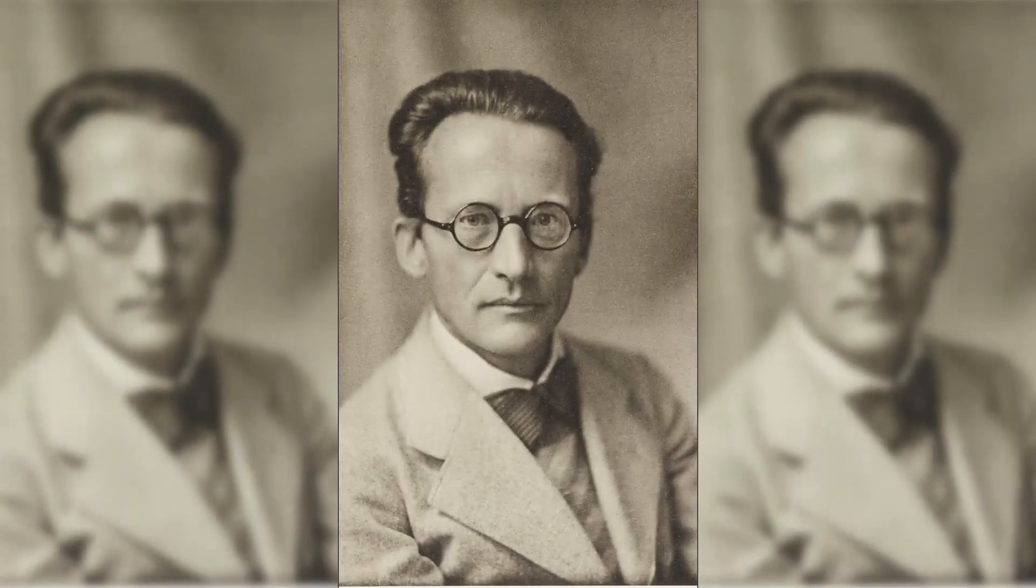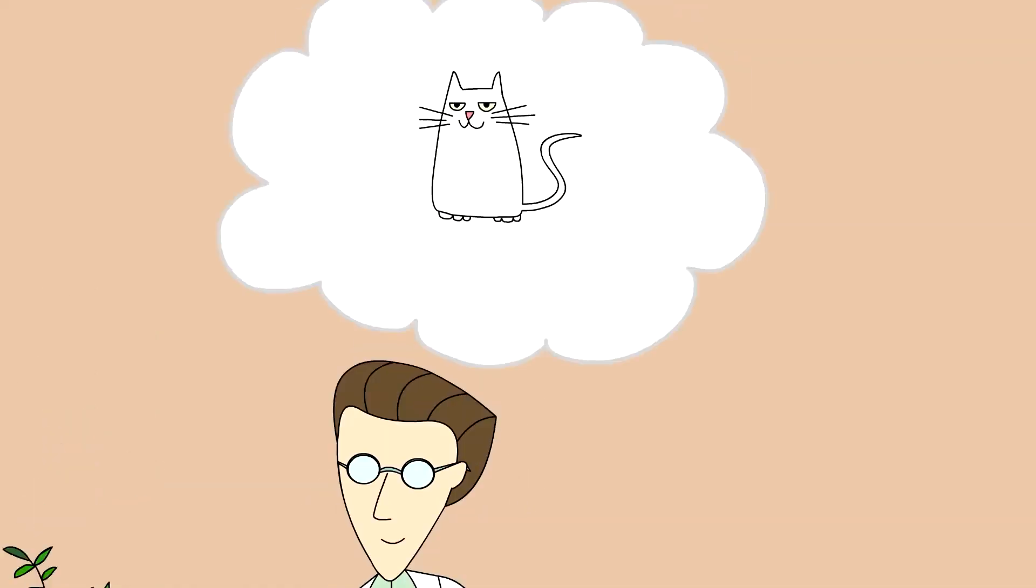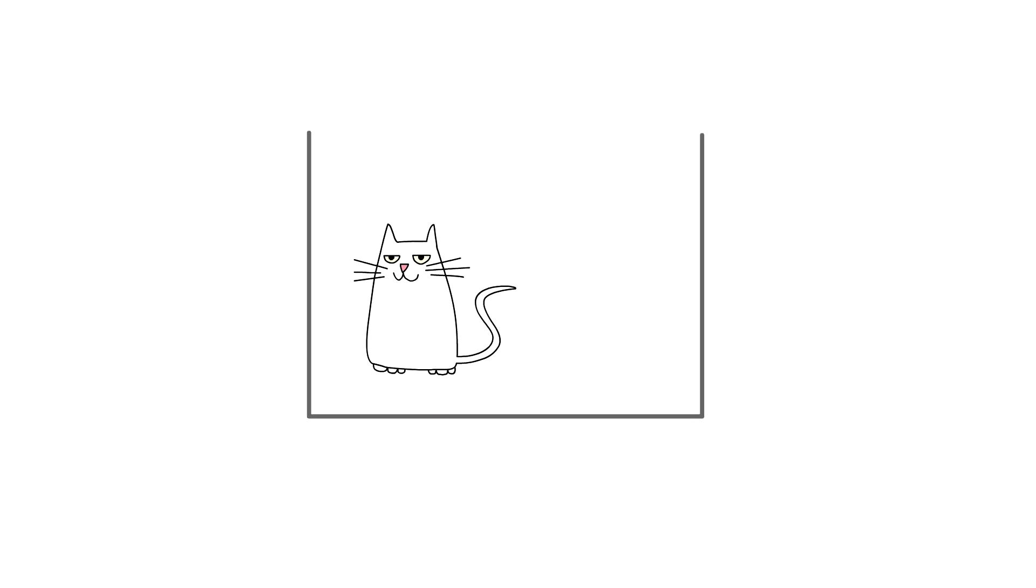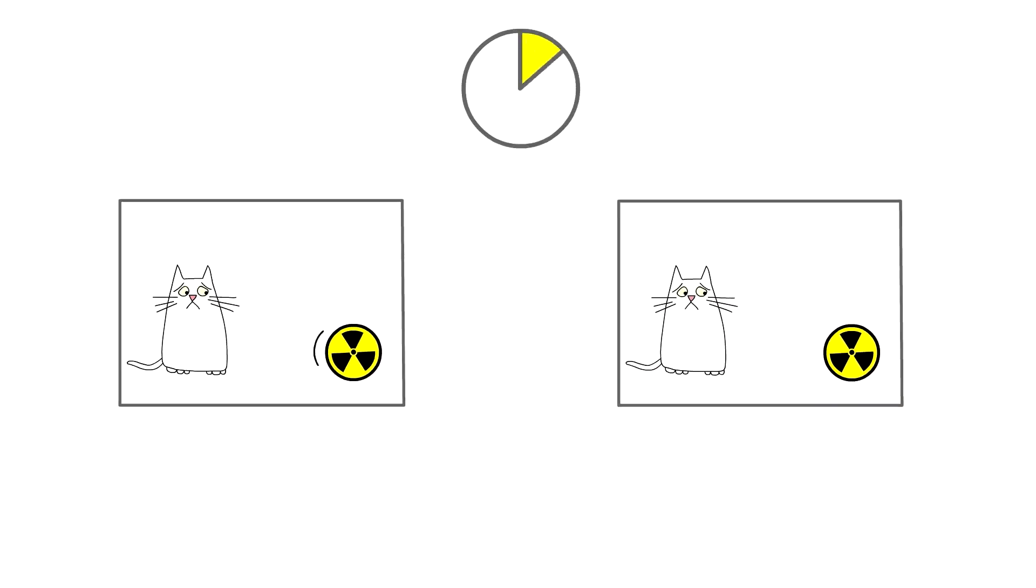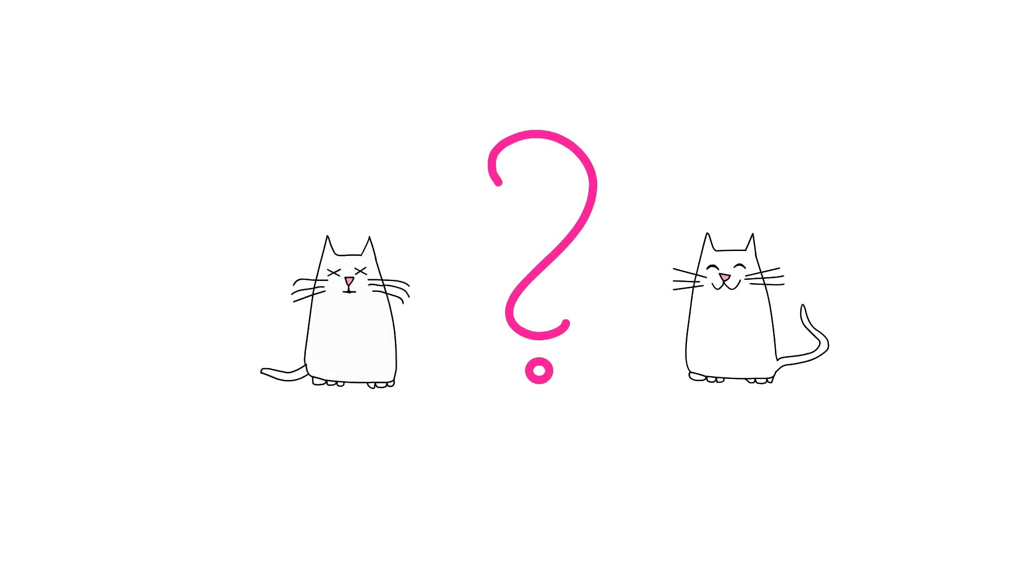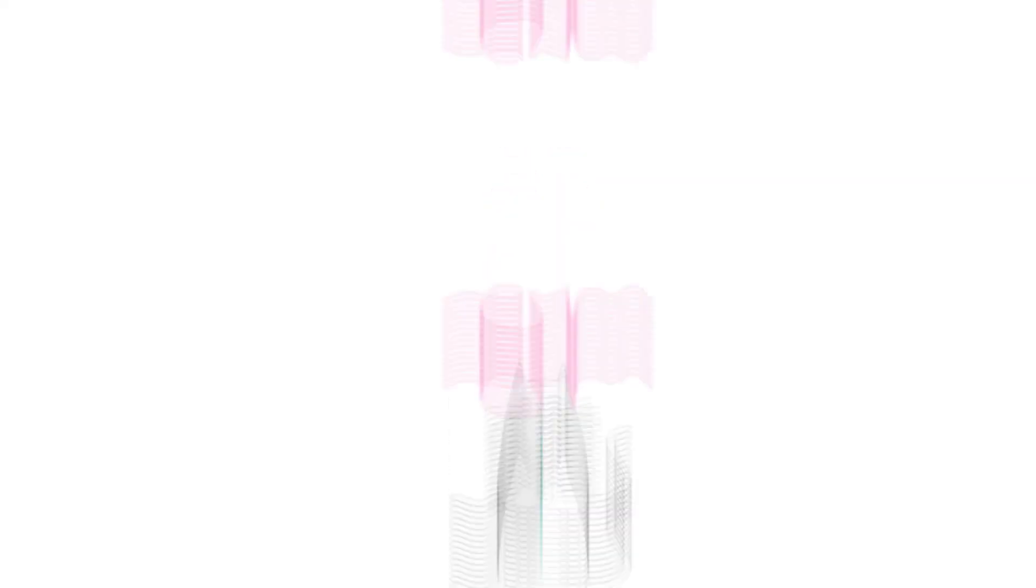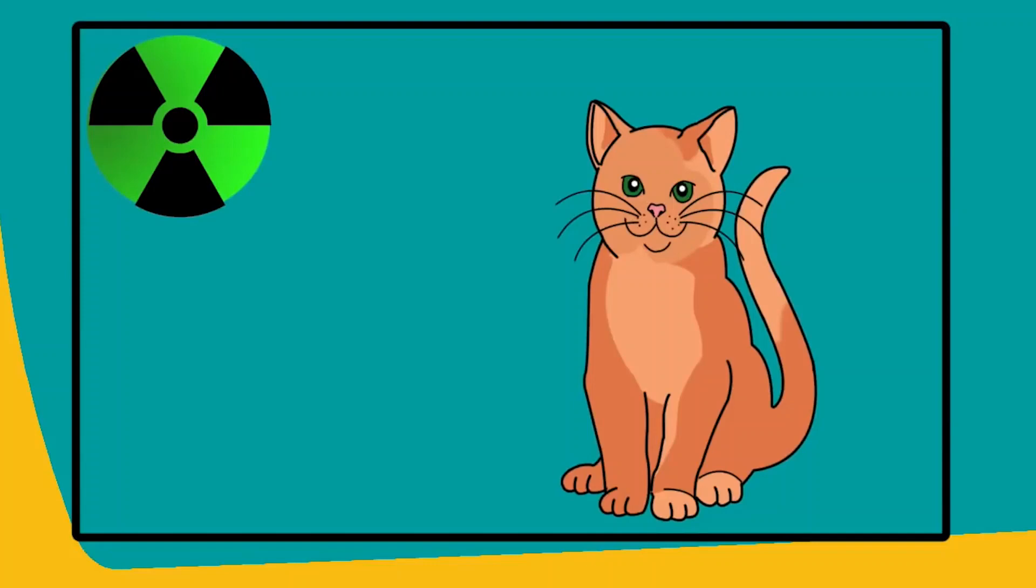Schrödinger described a thought experiment with a cat in 1935. He pictured a closed box with a cat inside at first. He assumed the box also had a gadget capable of releasing toxic gas. That gas would kill the cat if it was unleashed, and there was a 50% probability of the gadget to discharge the gas.